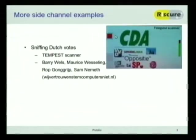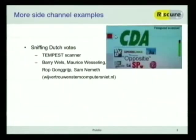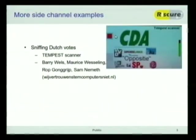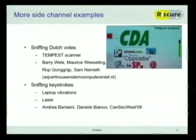This is a nice TEMPEST scanner. And they showed that you can differentiate between votes for the CDA, which is a political party, or other parties. It's another example of a side channel.